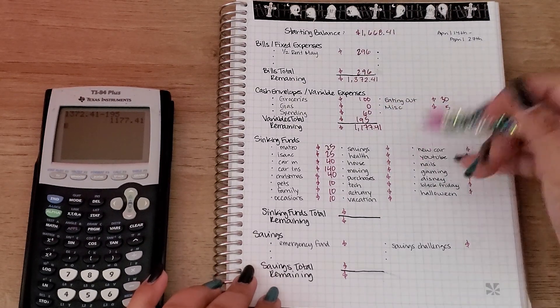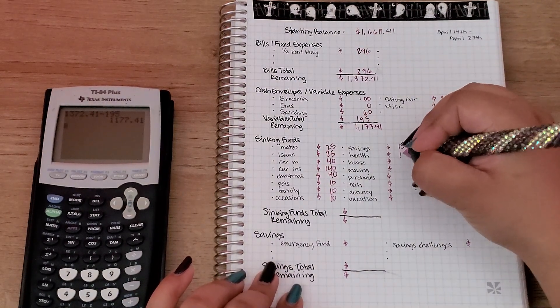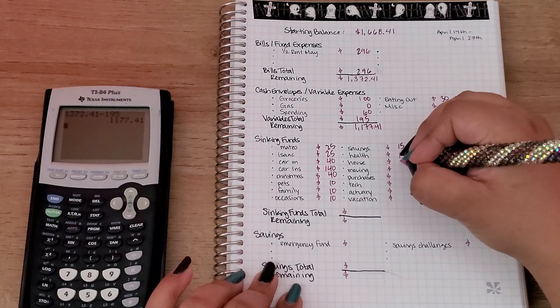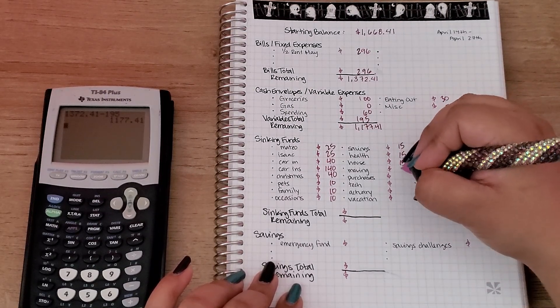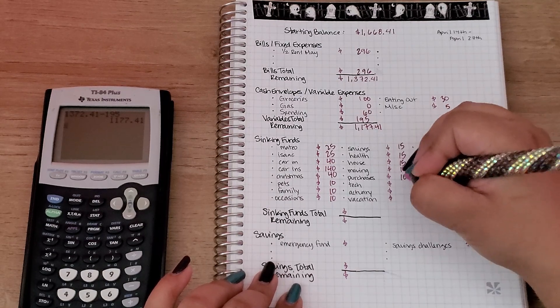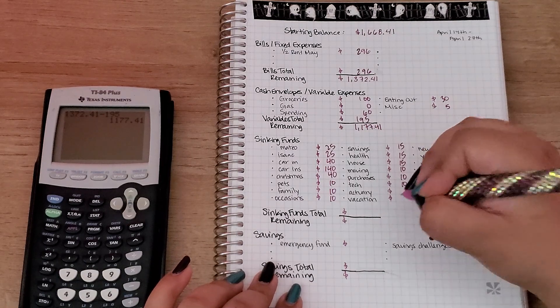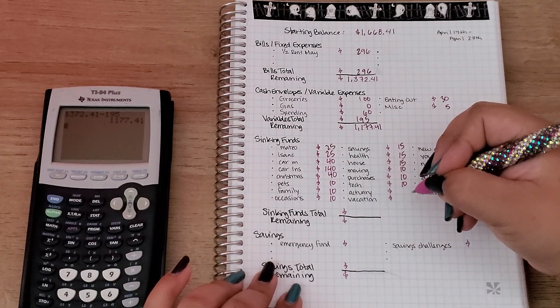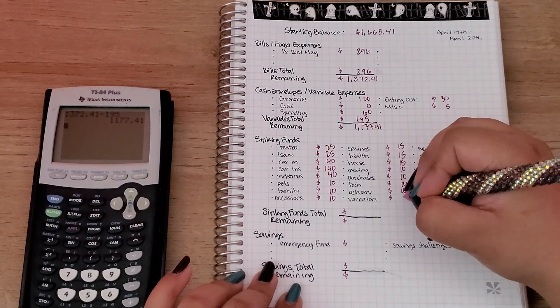Next up, savings is going to get $15, health is going to get $15, house is also going to get $15, and then moving is going to get $10, purchases $10, tech $10, actuary $10, vacation $10.